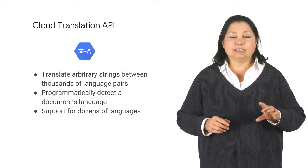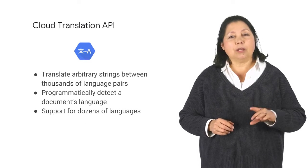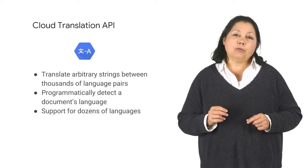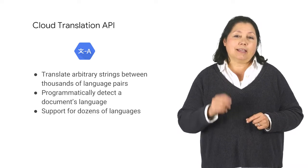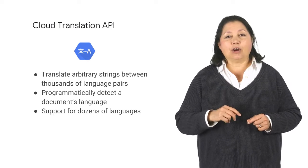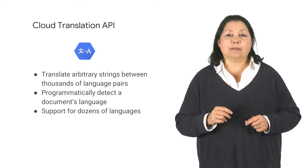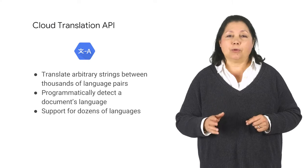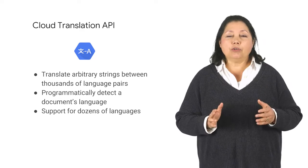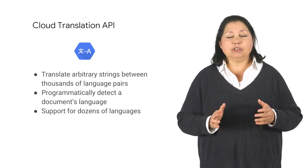Cloud Translation API provides a simple, programmatic interface for translating an arbitrary string into a supported language. When you don't know the source language, the API can detect it.